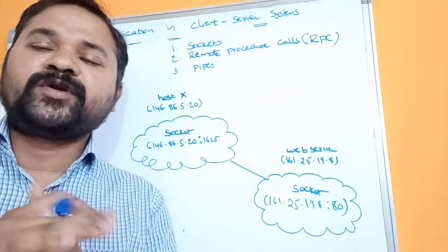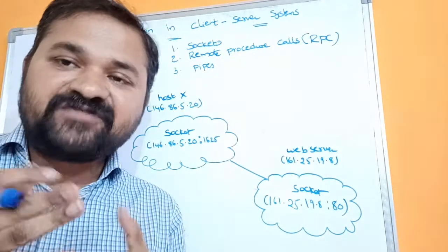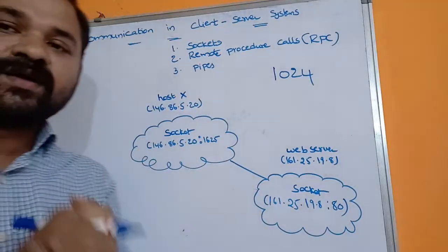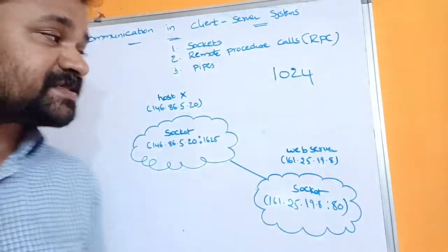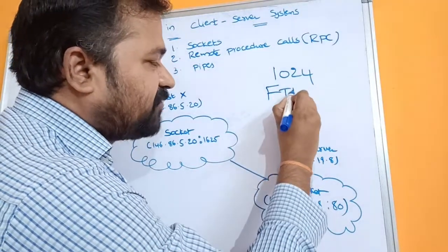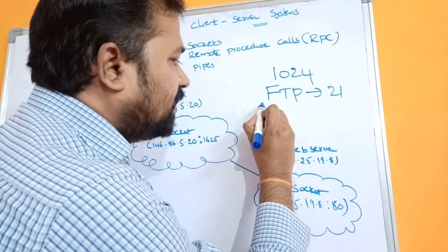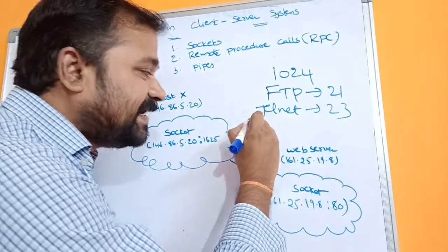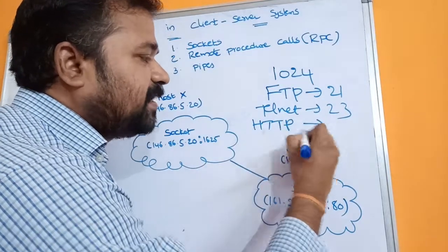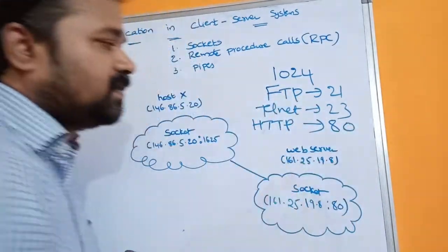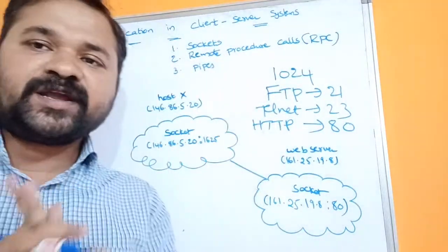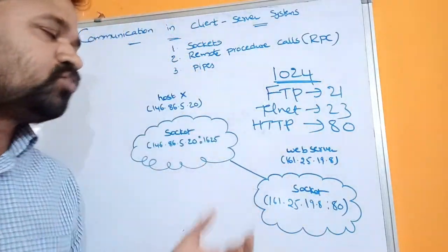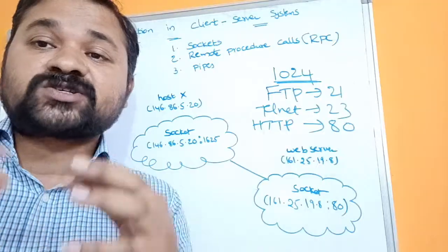We have several types of port numbers. There are 1024 well-defined port numbers in total. Some protocols have predefined port numbers — for example, FTP (File Transfer Protocol) has port number 21, Telnet has port number 23, and the web server (HTTP) has port number 80. So nearly 1024 predefined port numbers are available for corresponding protocols.